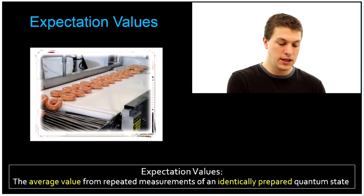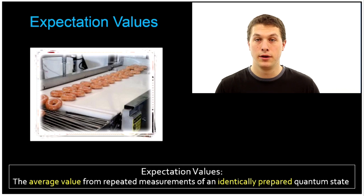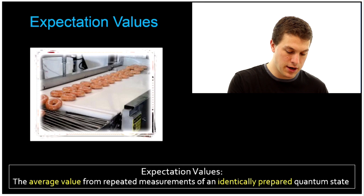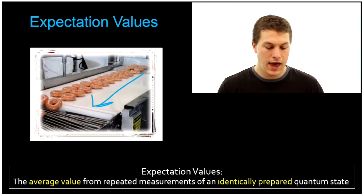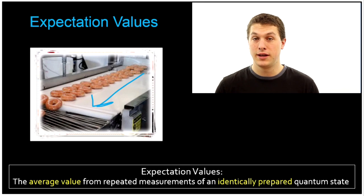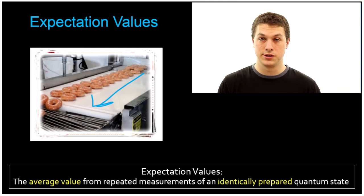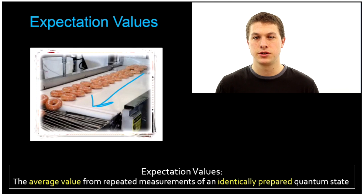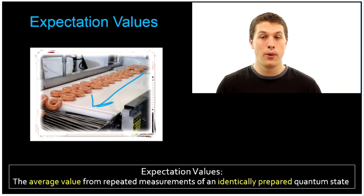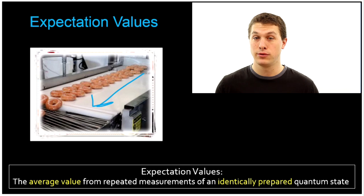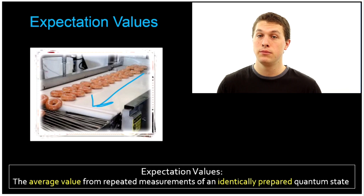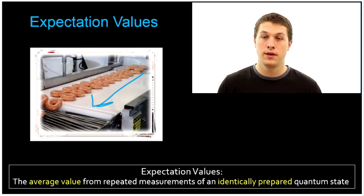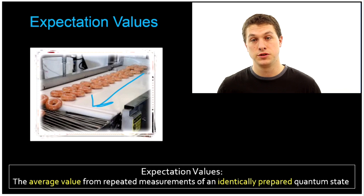By analogy, you can think of it like going to the conveyor belt of donuts at Krispy Kreme. You've got all these donuts coming off the assembly line, and you could take a bite of one, record how delicious it is, take a bite of the next one, record how delicious it is, and average all of those deliciousness scores. What you'd have then is your expectation of how delicious any random donut will be that you pull off the assembly line. Expectation values are the same thing, but for quantum states in terms of position or momentum.